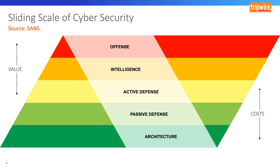If your organization hasn't built or maintained architecture and passive defense, you'll find diminishing returns on active defense and above. You should not attempt to get into intelligence or offense until these foundations are built. If you're not familiar with the Sliding Scale of Cybersecurity, there's a great white paper on the SANS website — it's only about 10 pages and is actually a really good read.